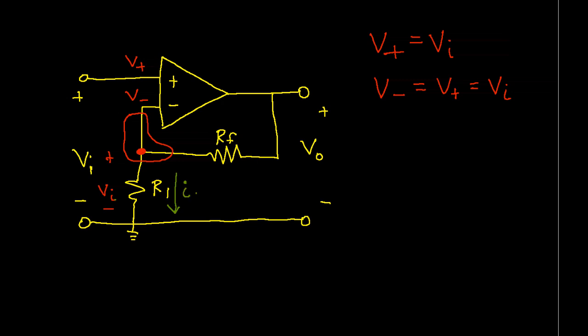Which then allows us to compute the current going through R1. So we'll call this I1. I1 is Vi divided by R1. The current going into the inverting input is zero. That's part of the assumption of the ideal op-amp model. So that means that all of the current that goes through I1 has to come down out of the output of the op-amp and through RF. This is the same. The current through RF is the same as the current through R1.